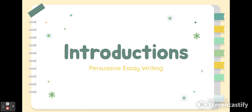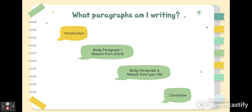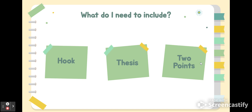Today we'll be looking at how to write the introduction paragraph of your persuasive essay. We are going to be writing four paragraphs total, so today we are talking about the very first paragraph. There are three main things we need to include in this paragraph: a hook to grab the reader's attention, a thesis statement that says the main point of our paper, and our two main points or reasons we are using to support our thesis.